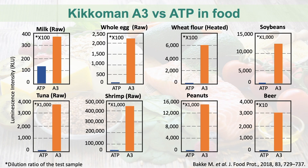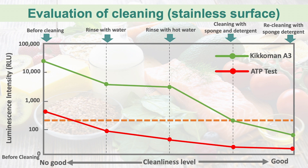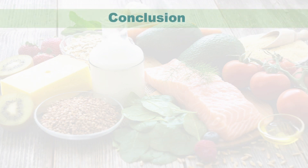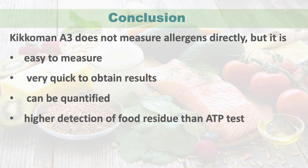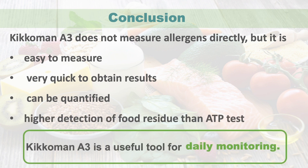Kikomon A3 showed high sensitivity and stability for detection of food residues and allergens compared to conventional ATP assays. Food residues containing high levels of ADP and AMP — such as meat, fish, and processed food — are detectable. Kikomon A3 represents a novel ATP test that can detect residues left behind by ineffective cleaning at lower levels. While it does not measure allergens directly, it is easy to use, quick to obtain results, and can be managed numerically, making it a useful tool for daily monitoring.